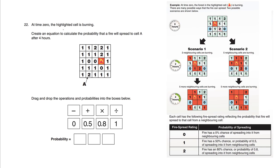At time zero, the highlighted cell is burning. Create an equation to calculate the probability that a fire will spread to cell A, this one here, after four hours.